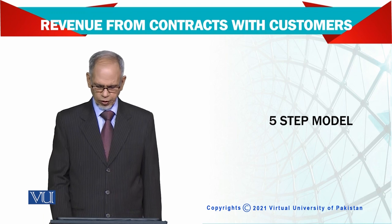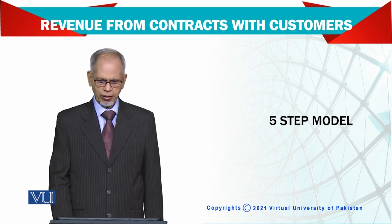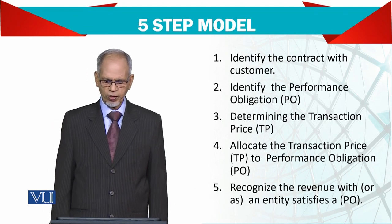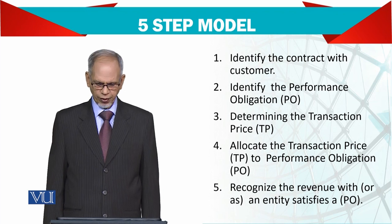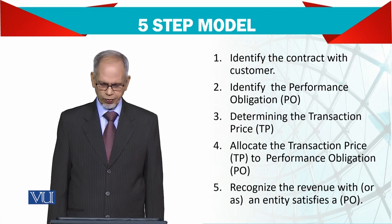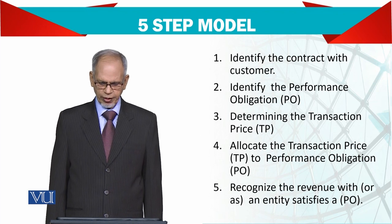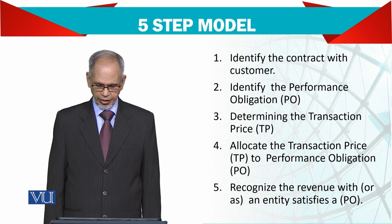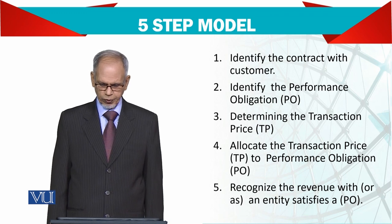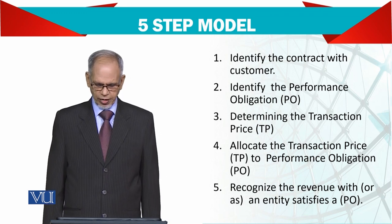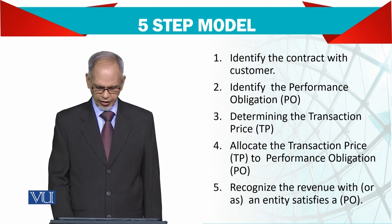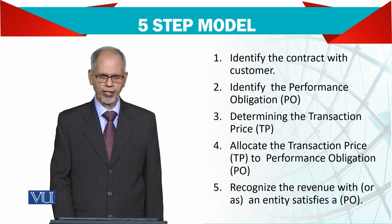Now the five steps model — Revenue from Contracts with Customers. The first one is identify the contract with the customer. Second is identify the performance obligation. Third is determine the transaction price. Then allocate the transaction price to the performance obligation, and then recognize the revenue when an entity satisfies a performance obligation.